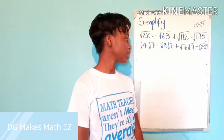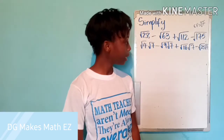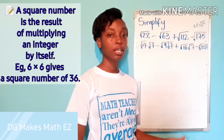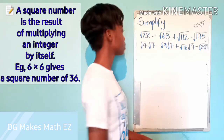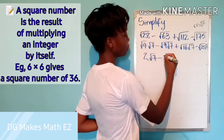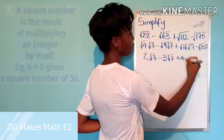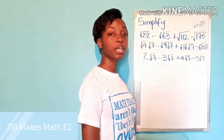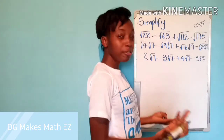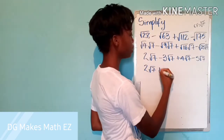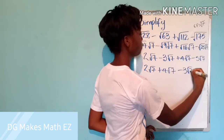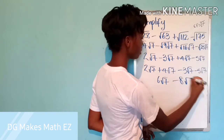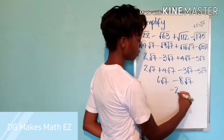Now, what do you notice about the coefficients of root 7? We have square root 4, square root 9, square root 16, and square root 25 — these are all square numbers. So we simplify: square root of 4 is 2, giving 2 root 7; square root of 9 is 3, giving minus 3 root 7; plus 4 root 7; minus 5 root 7. Joining positives: 2 root 7 plus 4 root 7 is 6 root 7, minus 3 root 7 minus 5 root 7 is minus 8 root 7. So 6 root 7 minus 8 root 7 gives us negative 2 root 7.